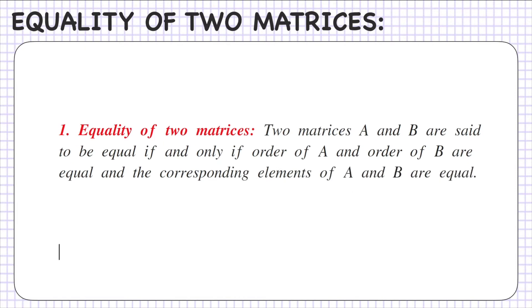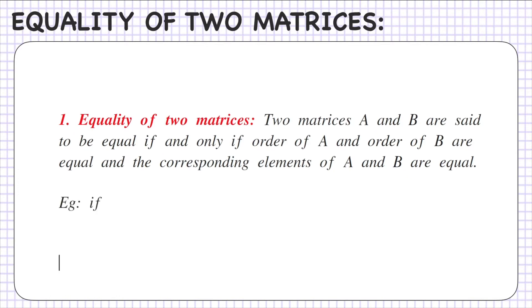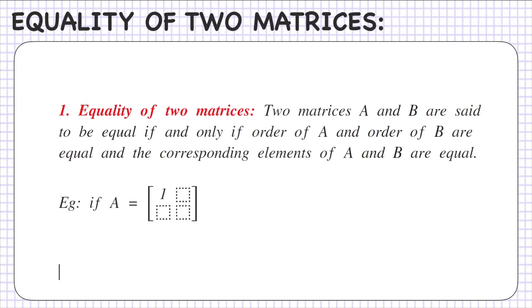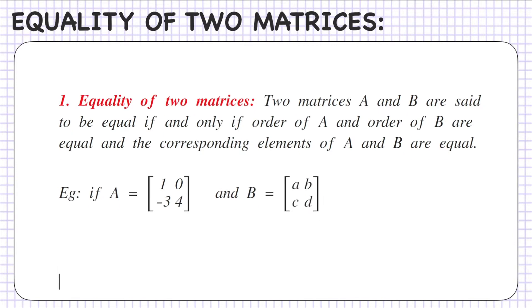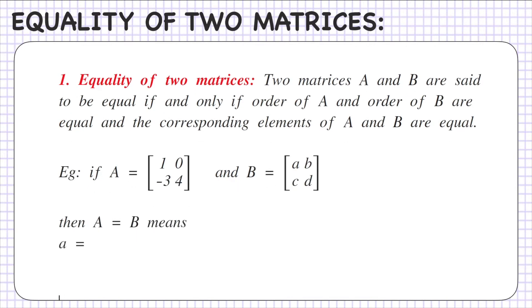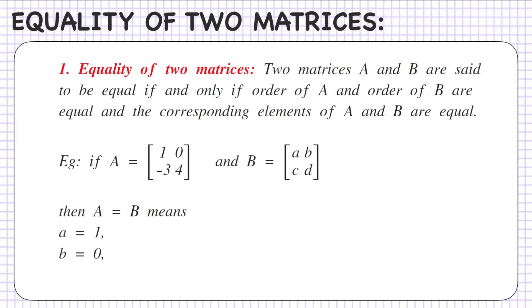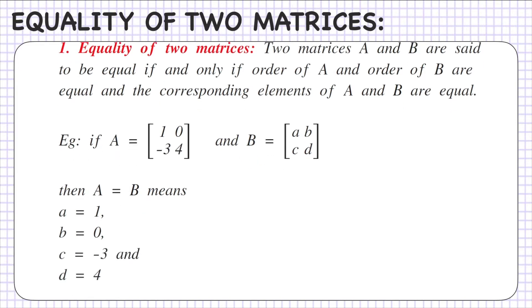So the first condition is that the order should be equal, as well as the elements should also be equal. For example, if A equals [1, 0, -3, 4] and B equals [a, b, c, d], and both have order 2, then matrix A equals matrix B means a=1, b=0, c=-3, and d=4.